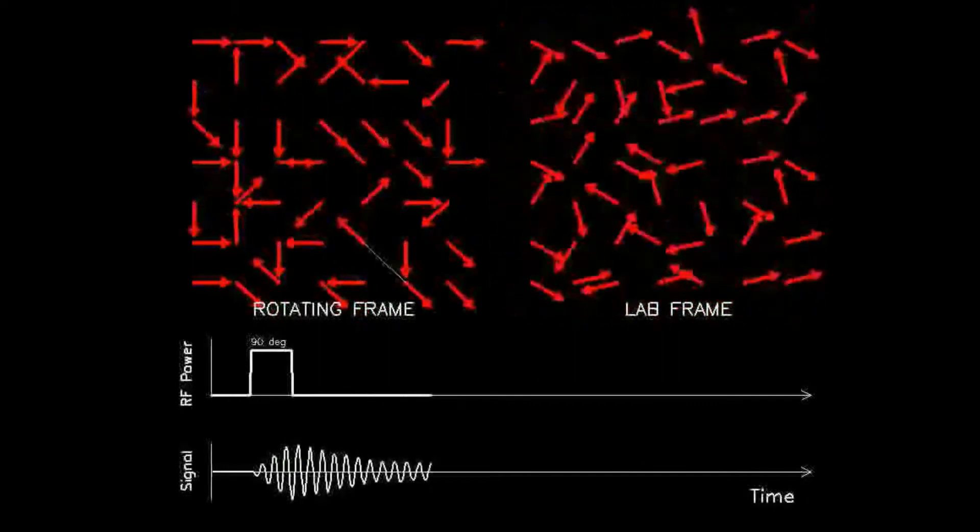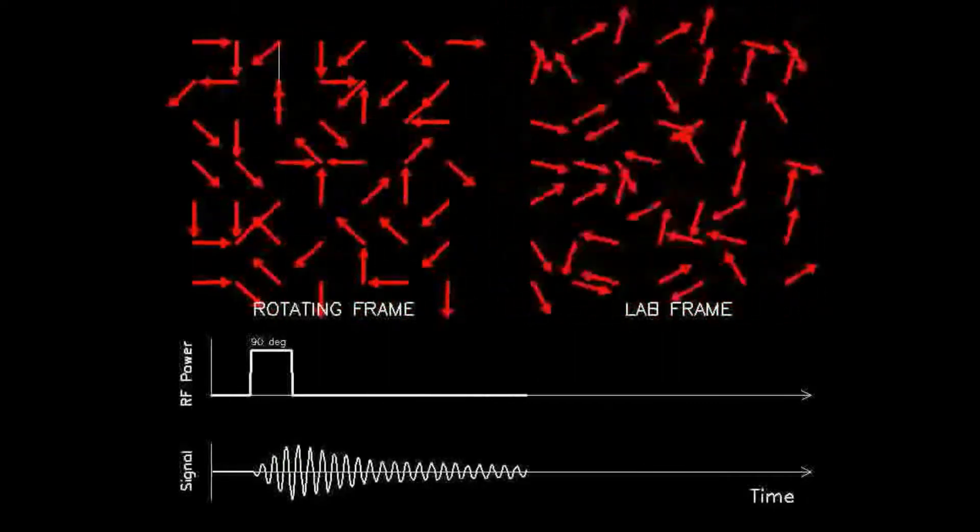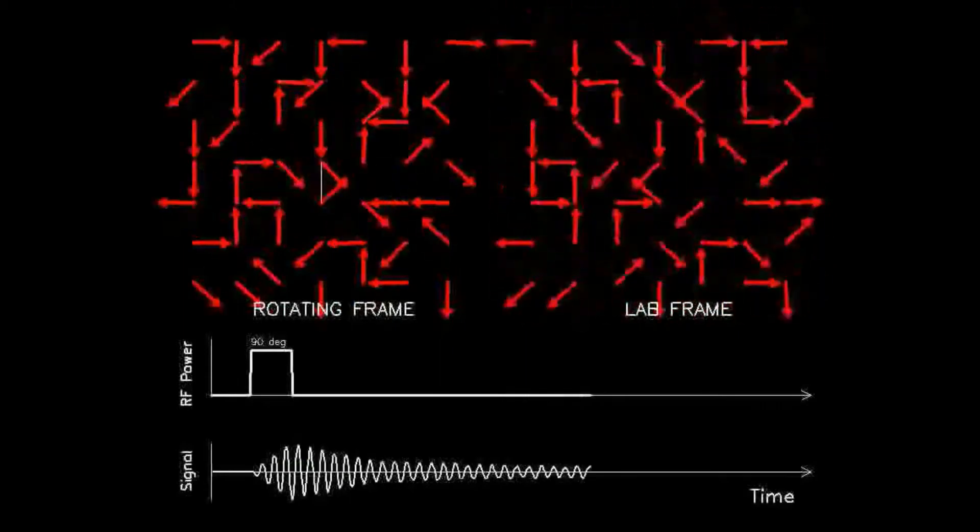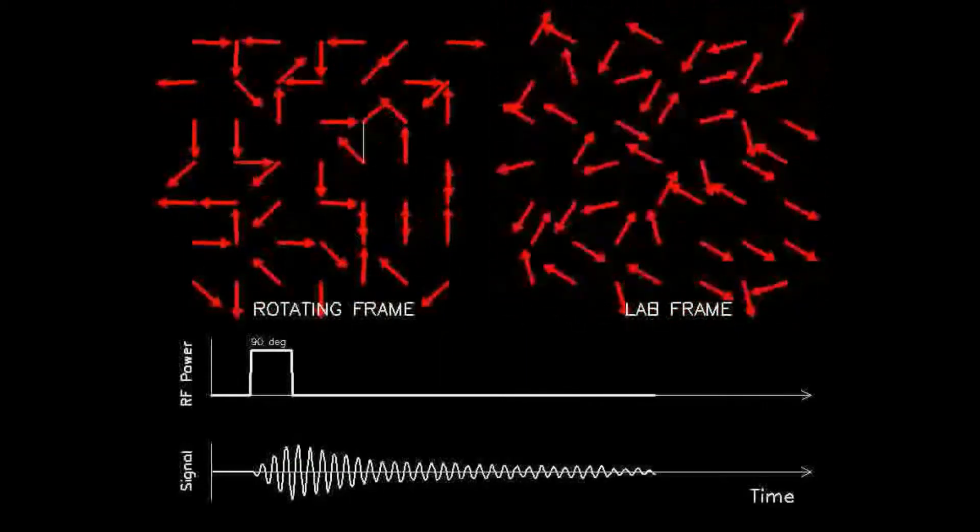Since the antenna detects the vector sum of all transverse components, if the vectors are dephased, then the vector sum becomes very small and the signal is weak.